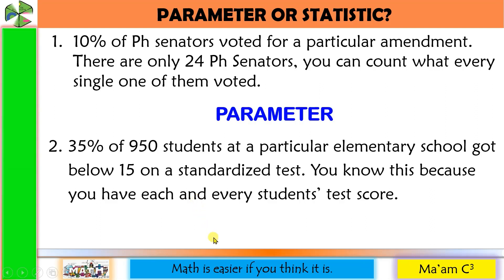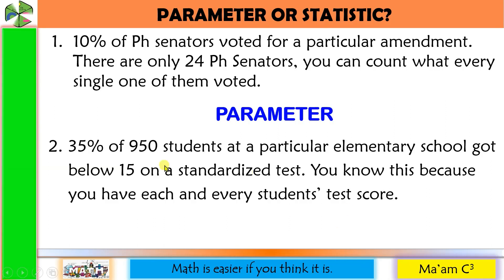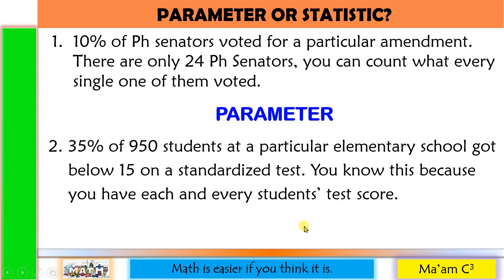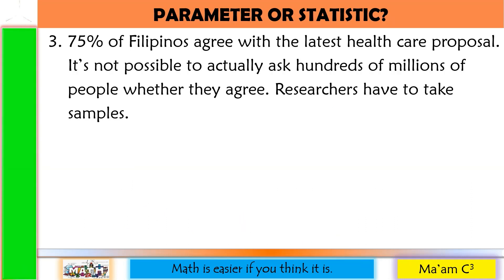Number two: 35% of 950 students at a particular elementary school got below 15 on a standardized test. You know this because you have each and every student's test score. Once again, you have the data for the whole population — you have each and every student's test score. So that is the population. Therefore, this is also a parameter.